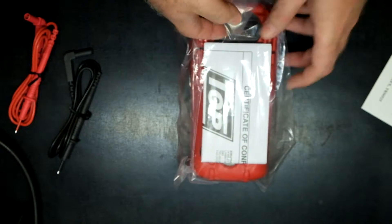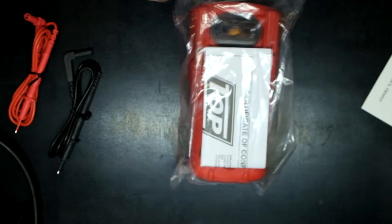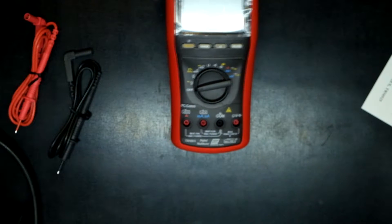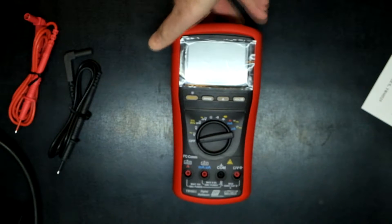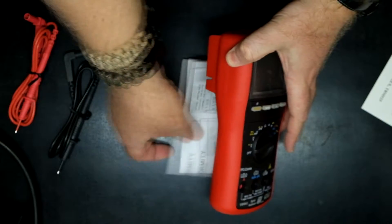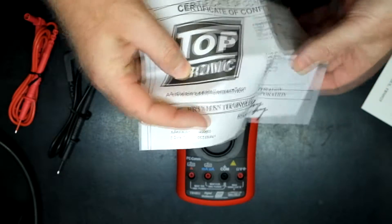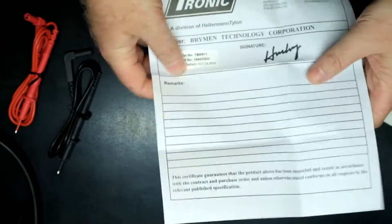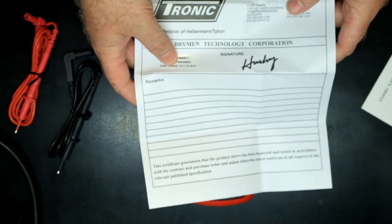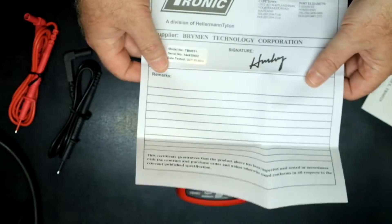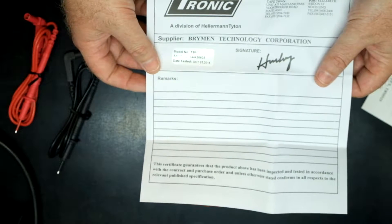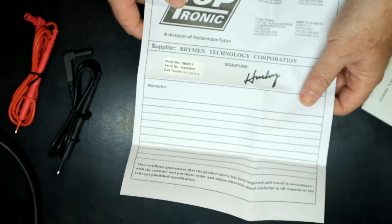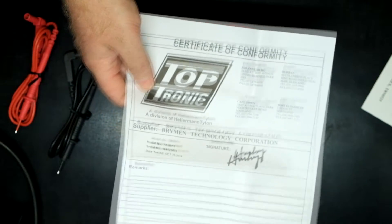Here we have the certificate of conformity for the meter with its serial number. It basically says that it meets its minimum requirements and conforms in all respects to the relevant published specification.